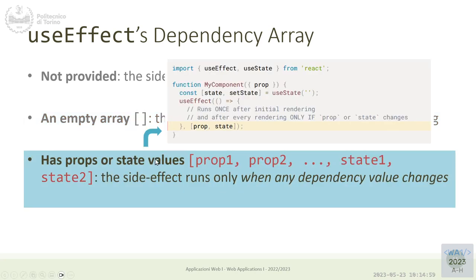The normal case is when we want the effect to run many times during the lifetime of a single component. In that case we should provide the dependency variables - a change of these variables will trigger a new execution of the effect. This list should include every variable used inside the effect code, since the effect callback has a closure of the surrounding environment. Everything imported through the closure should also be a dependency, otherwise we risk going forward with stale values.